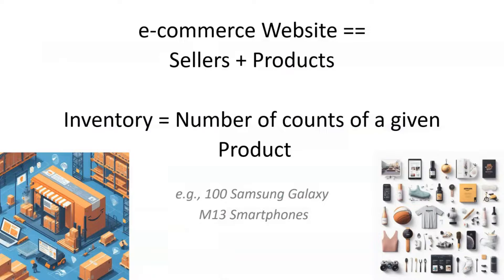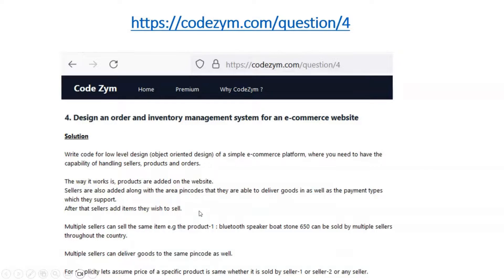In any e-commerce website there are many sellers. Whenever you go on Amazon you can see that for every product it is being sold by multiple sellers. Those sellers have their own warehouses and those warehouses can contain multiple product items. Inventory is simply the number of counts of a given product sold by a given seller — for example, a seller can have 100 Samsung Galaxy M13 smartphones.